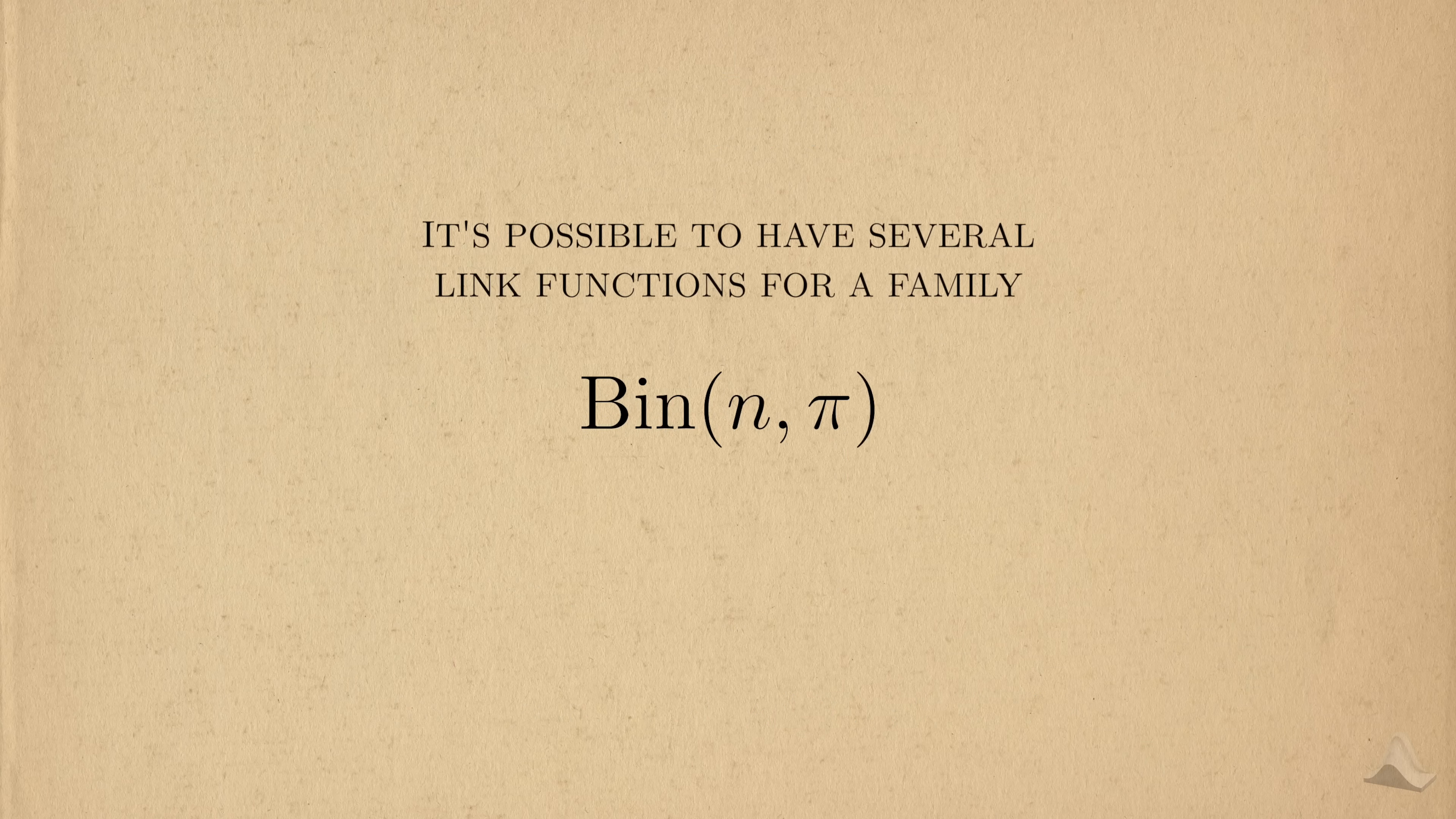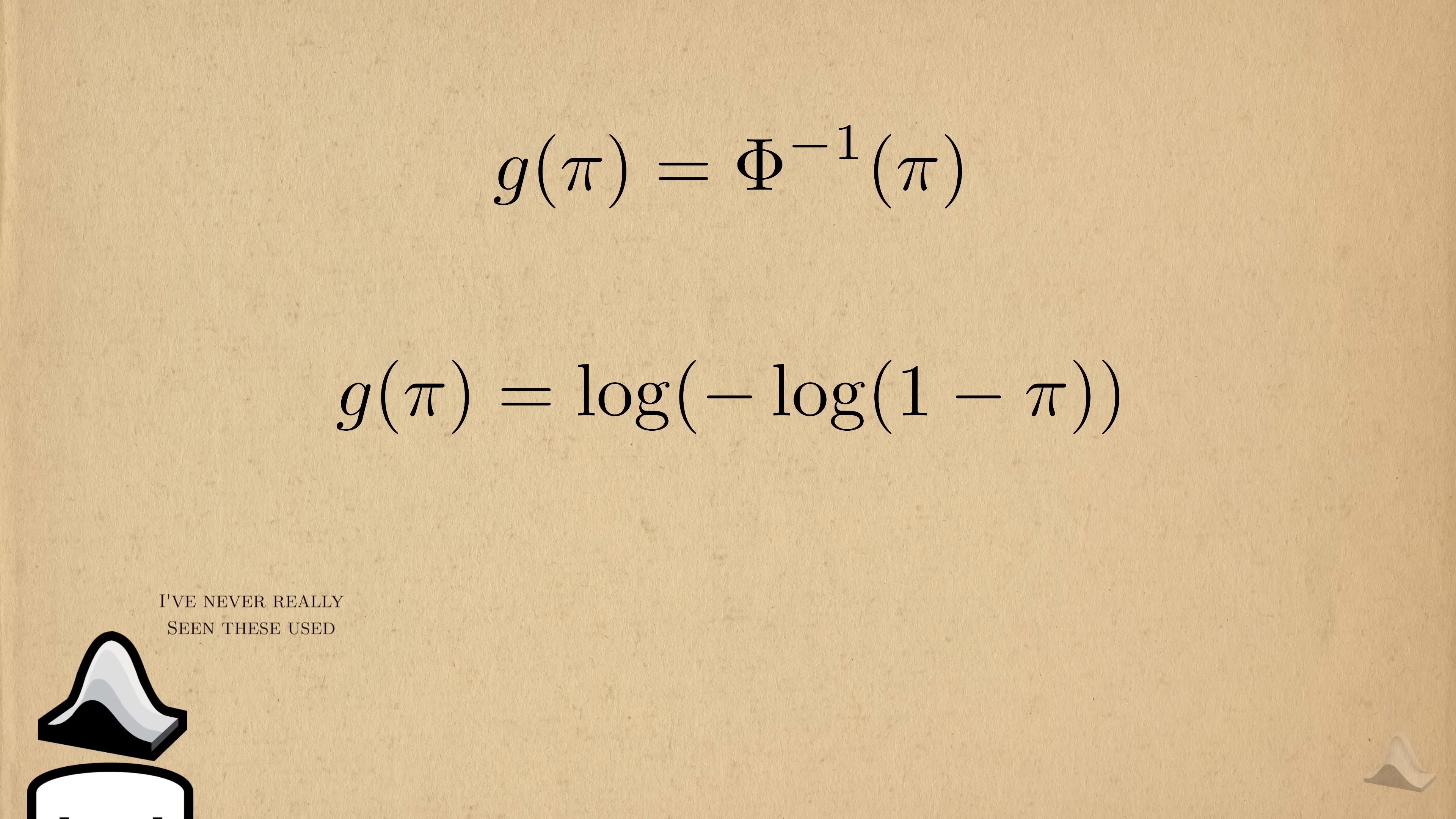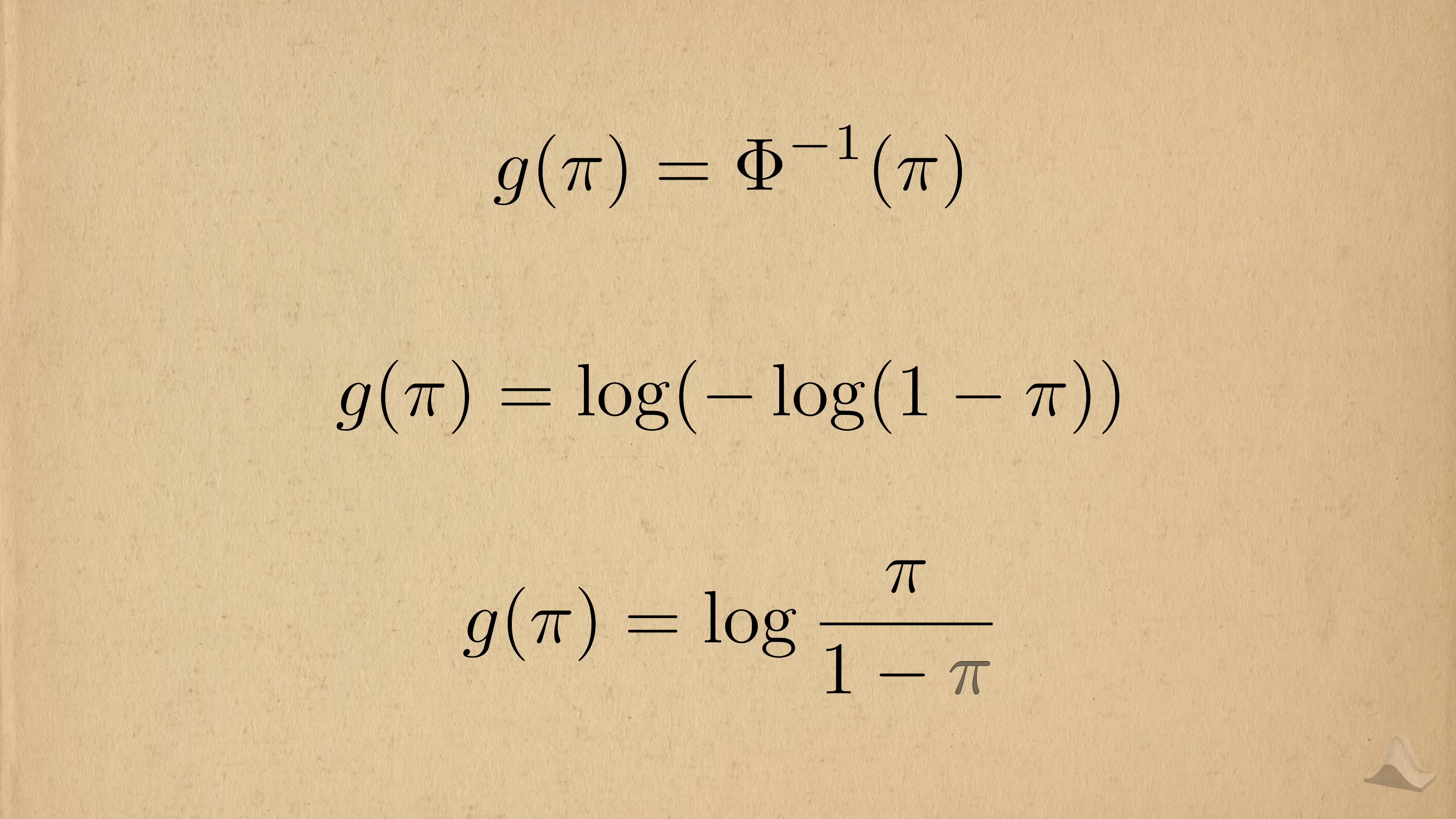That being said, it's possible to have several link functions available for a family. For logistic regression, we can use other links like the probit link or the complementary log log link, but to be honest, I haven't really seen them used in my experience. The function that comes from converting a distribution into its exponential family form has a special name, the canonical link function. We get the logit transform from doing this to the binomial distribution, so that's the canonical link.